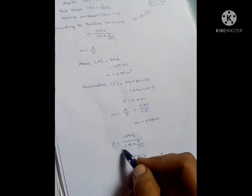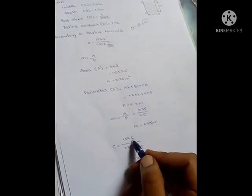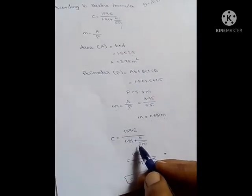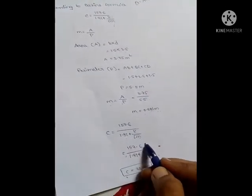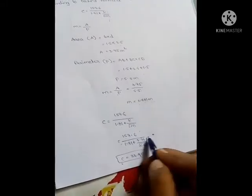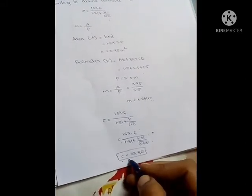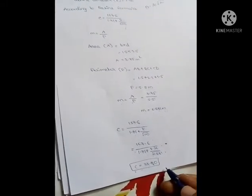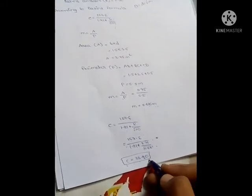Substituting into Bazin's formula: C equals 157.6 divided by (1.81 plus k divided by √m). After substitution, C value comes to 33.80.